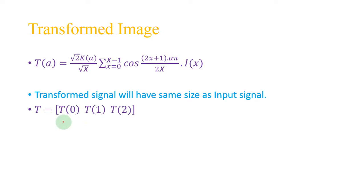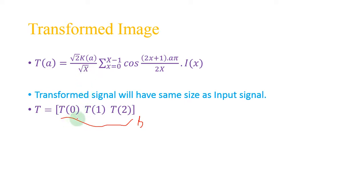The transformed signal will have the same size as the input signal — it is a signal, not an image. The size of the input signal was capital X, which was equal to 3. So the transformed signal T has three elements: T(0), T(1), and T(2), giving it size 3, matching the input signal size of 3.